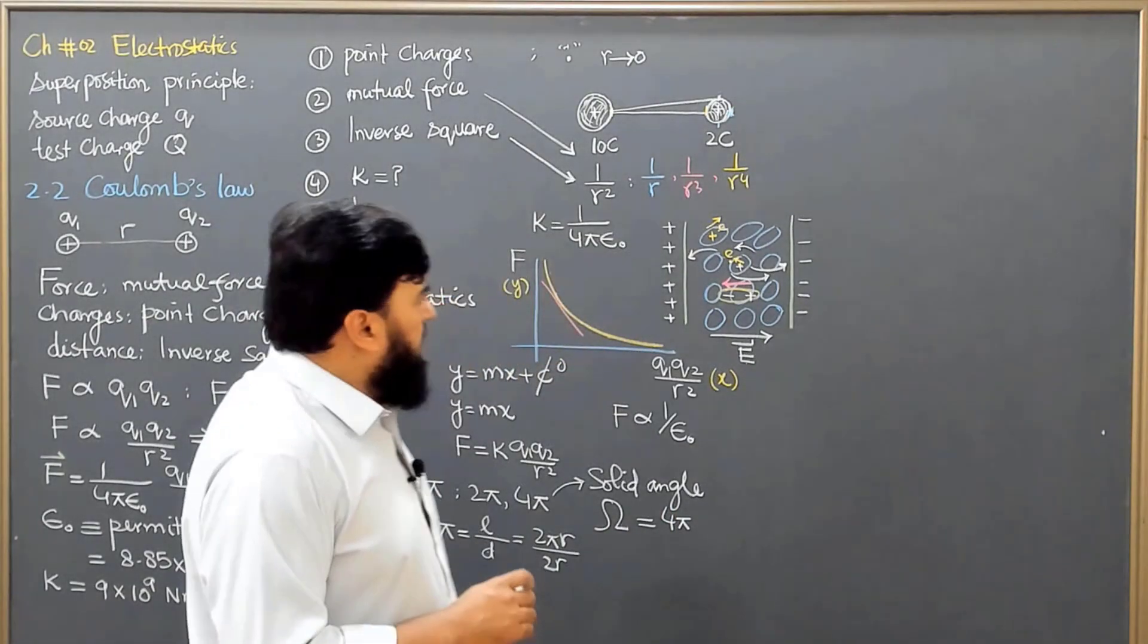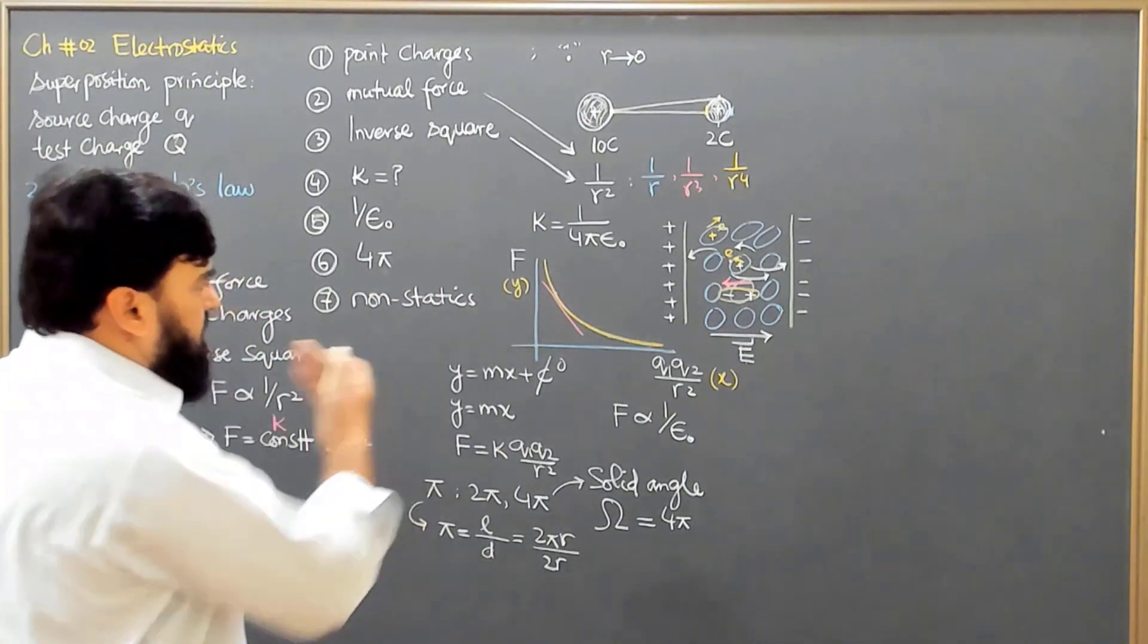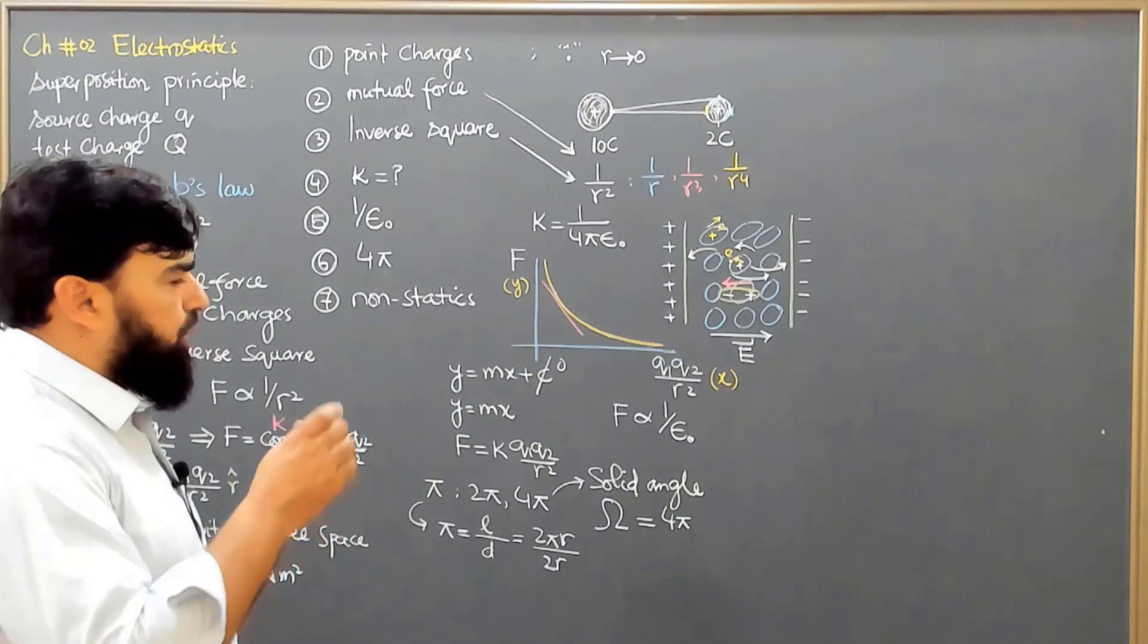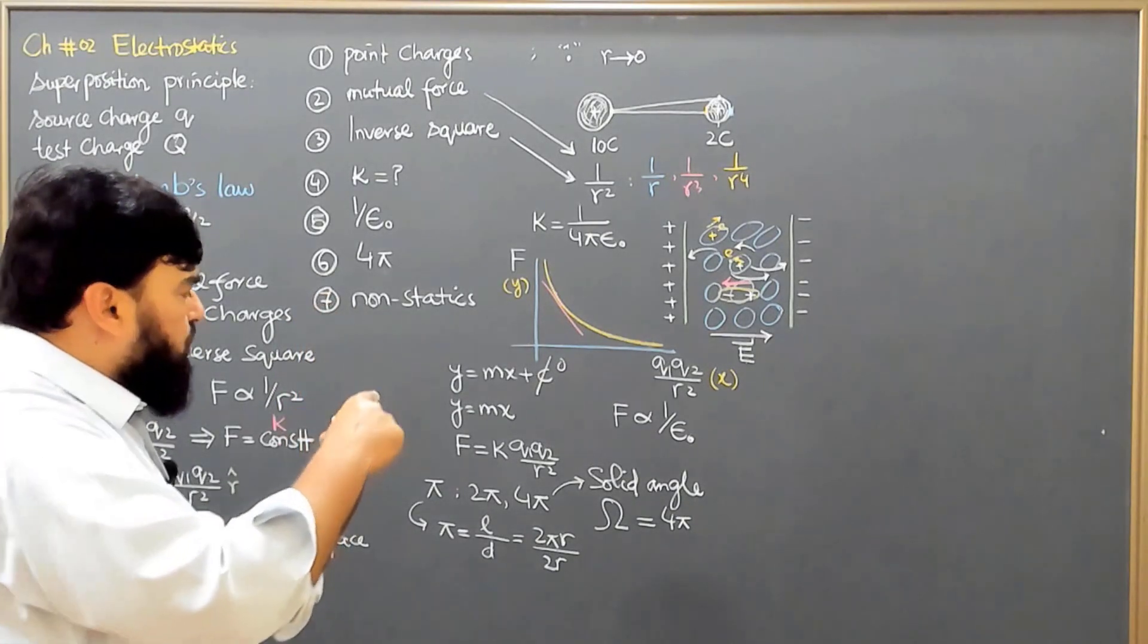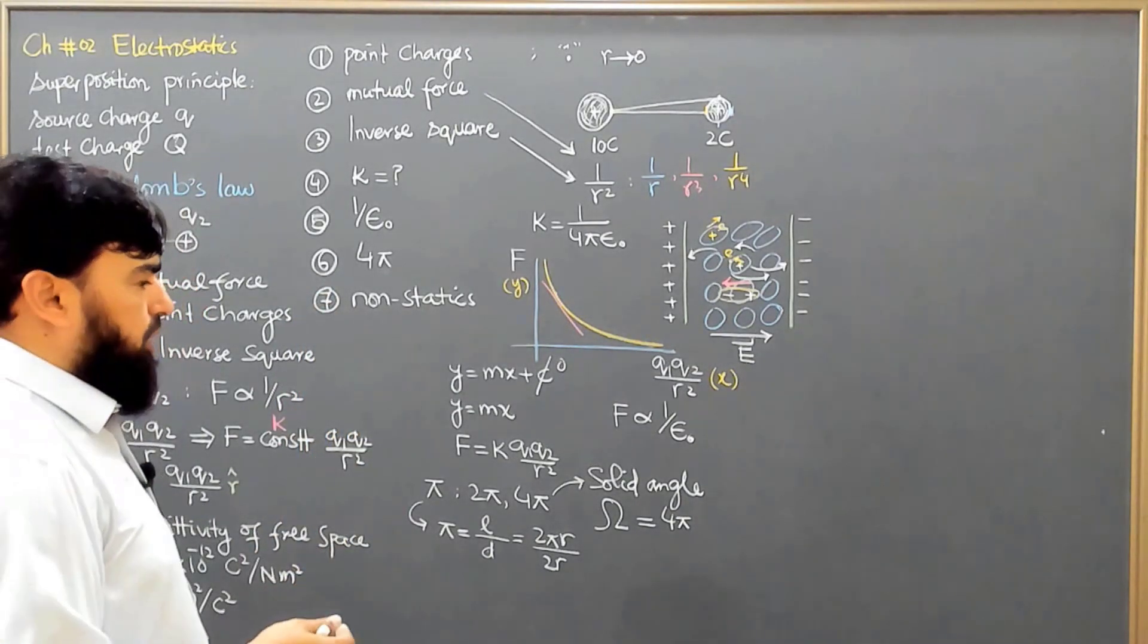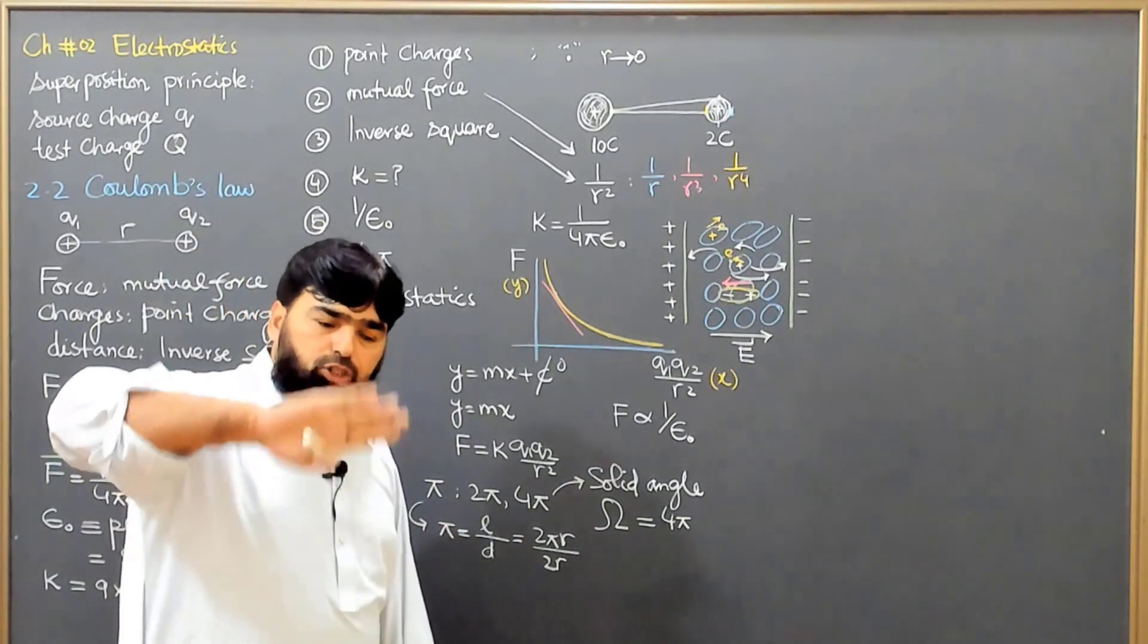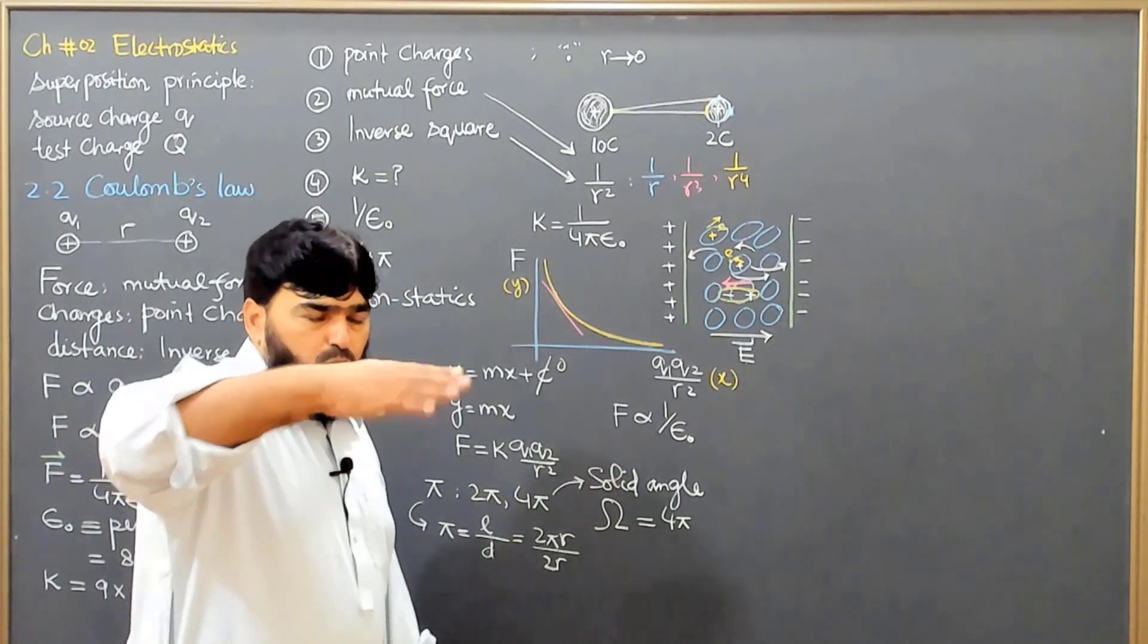For example, I am looking to the board and the board is in 2 dimensions, so I am seeing only a planar angle. But when I am looking to any 3D object, for example let's say I am looking to a sphere, then I am not seeing only the plane area of the sphere but also its curvature.